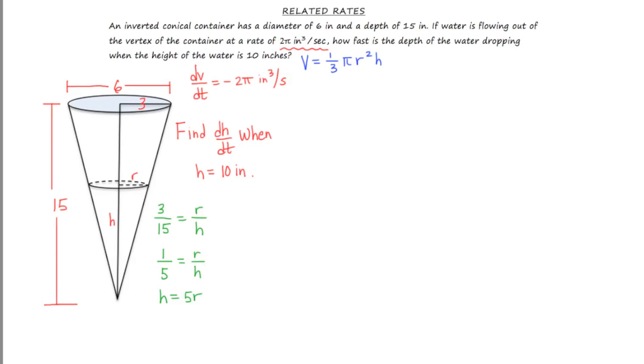Okay, now since I'm trying to find dh/dt, I want my variable to be h. I want to have h in my equation so that I can solve for h. So I really would prefer to get rid of the r. So what that means is I'm going to isolate r, and r is going to equal (1/5)h. This expression is going to be really important in a moment.